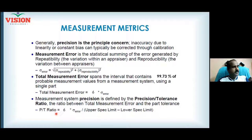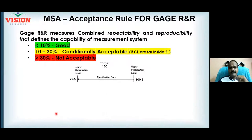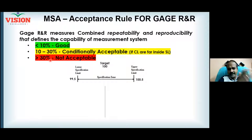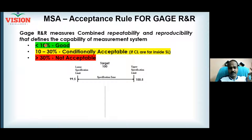This precision-to-tolerance ratio is otherwise called Gauge R&R. Gauge R&R must be less than 10% — if it is less than 10%, the measurement system is good. If it is 10–30%, it is conditionally acceptable. More than 30% is never acceptable; you should not collect data with such a system. Instead, improve the measurement system or ask for a complete change.